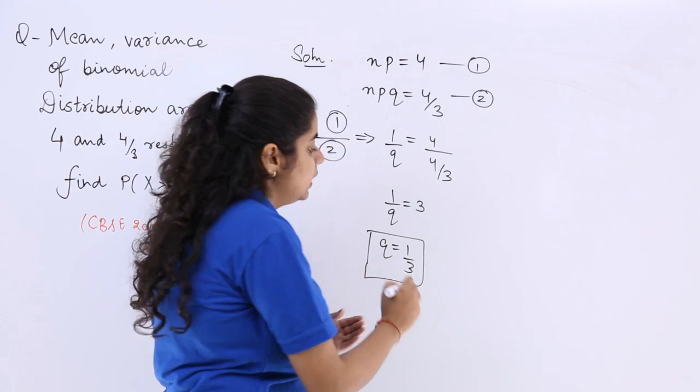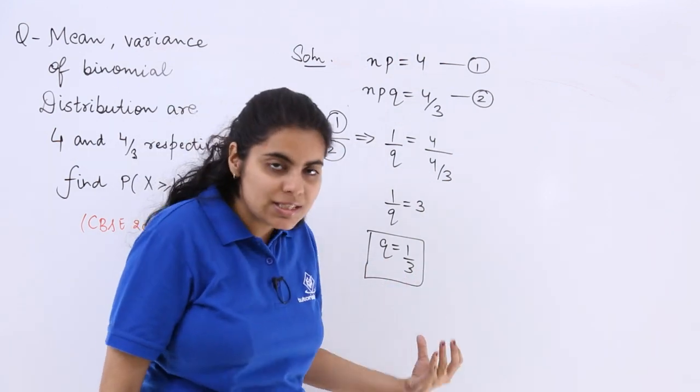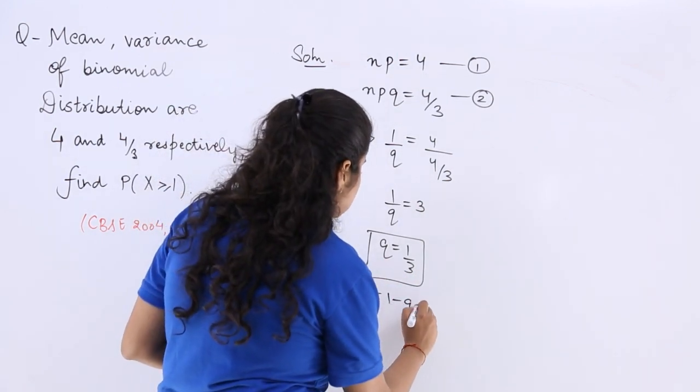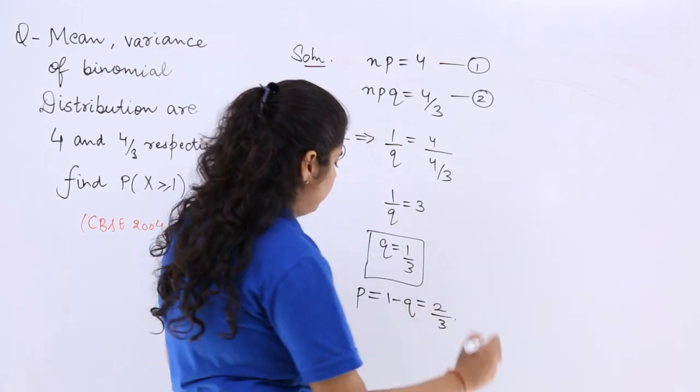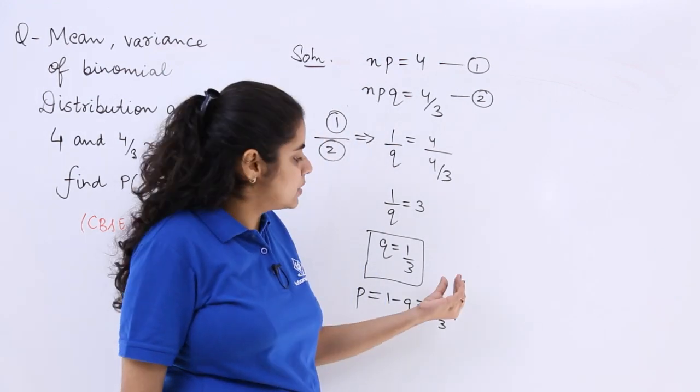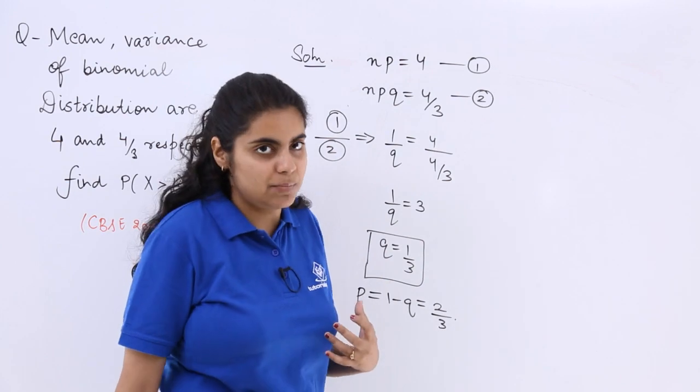This is the probability of the failure. With this knowledge, we can find P which is 1 minus Q which is 2 by 3. So probability of success comes in picture. Probability of failure comes into picture.